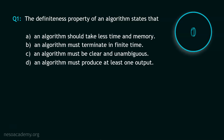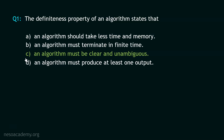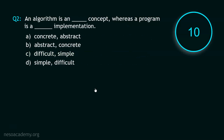Stop! The correct option is option C. An algorithm must be clear and unambiguous. This is the definiteness property of an algorithm. Now let's move to question number 2.